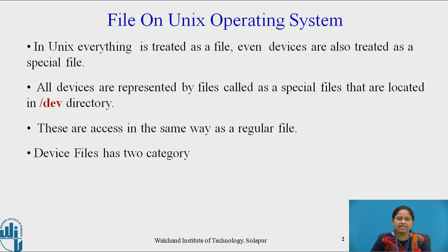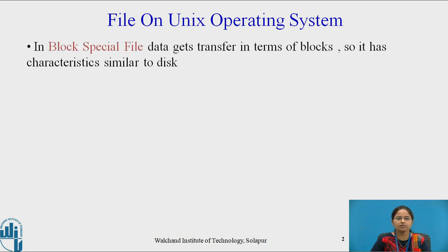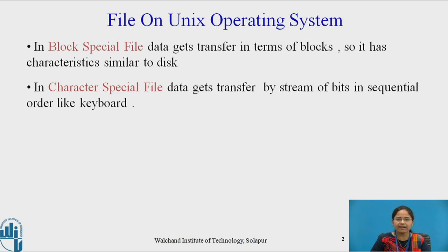Device files have two categories: first is block special file and second is character special file. In a block special file, data gets transferred in terms of blocks, so it has characteristics similar to the disk — that's why it is called a block special file. While in a character special file, data gets transferred by a stream of bits in sequential order, like a keyboard.